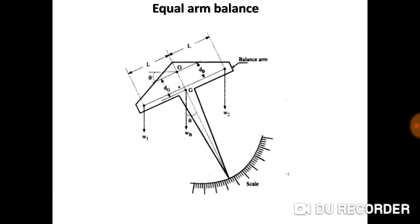In an analytical balance, a long pointer is attached at right angles to the beam at the fulcrum and indicates zero on a scale when the beam is parallel to the ground level. The balance arm rotates about the point O, and two forces W1 and W2 are applied at the ends of the arm. W1 is an unknown force, whereas W2 is a known force, that is a standard mass. Point G is the center of gravity of the balance arm, and Wb is the weight of the balance arm and the pointer acting at G.